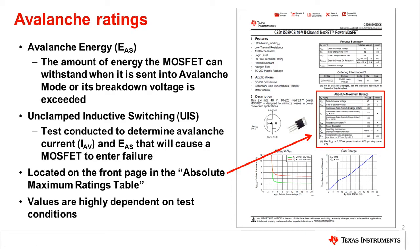So a brief history — this parameter, avalanche energy and UIS current, was actually not added to MOSFET datasheets until the 1980s. That's when it became not just a datasheet parameter, but a parameter that a lot of customers demanded that the FET be tested to before it was sent into production. Particularly when the MOSFET is being recommended for power supply or switching applications, it's a crucial parameter for weeding out weaker devices or devices more susceptible to failure.